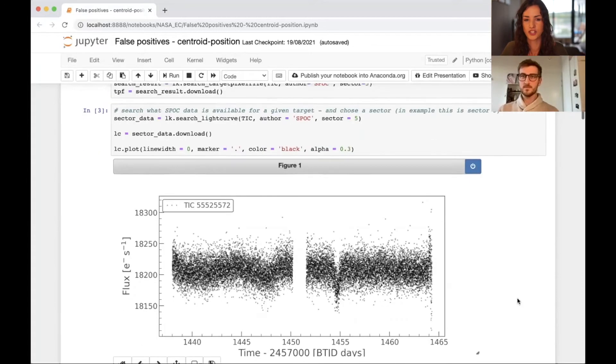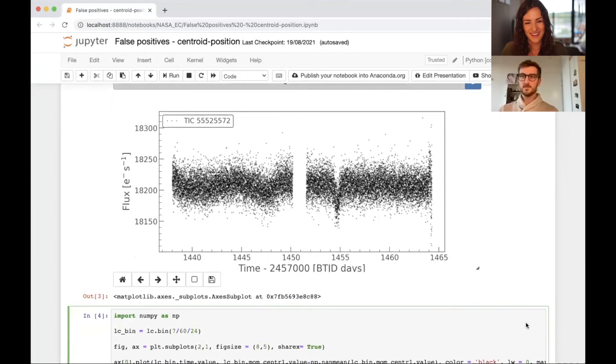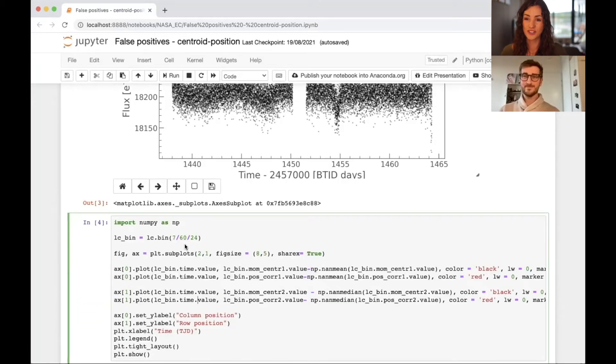Alright. So we are using a target that we have used quite a lot before, TIC 5.525572. And first, we're just going to, we've downloaded the data. We're looking at just one sector, sector five. We are downloading the data here and we're plotting it and we're seeing this, hopefully by now, familiar light curve where we can see that transit event, which is occurring over here. Okay. Nice dip. Transit, planetary transit. That's what we want. That's what we're looking for.